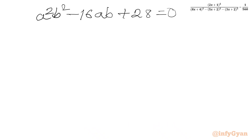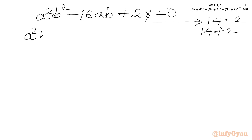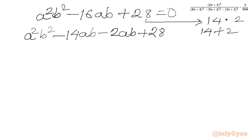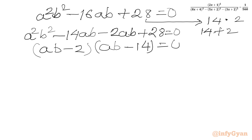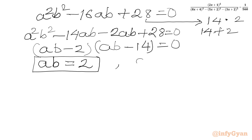Using factorization: the factors of 28 are 14 and 2, and 14 + 2 = 16. So we split the middle term: A²B² minus 14AB minus 2AB + 28 = 0. Taking common factors gives (AB − 2)(AB − 14) = 0. Applying the zero product rule: AB = 2 or AB = 14.